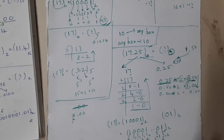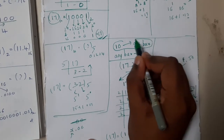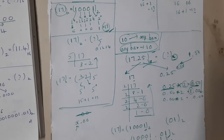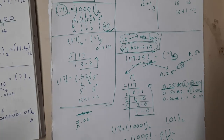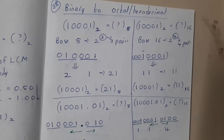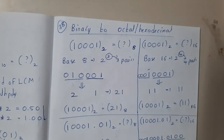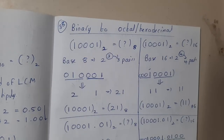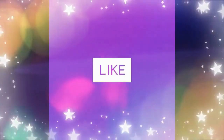What we learned here is how to convert any base 10 value — whether integer or decimal — into any other base, and the reverse process from any base back to base 10. In the next lecture we will continue with more problems, including converting binary numbers directly to octal or hexadecimal. Thank you for watching — like, share, and subscribe!